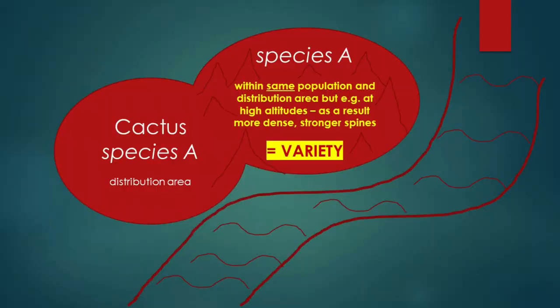Abbreviation number two: if it says VAR. or V. that's short for variety. A variety is when the plant is only very slightly differing in its appearance from the main species, and quite importantly it still grows in that same area within and alongside the main population of the species — so it's just a subset that looks slightly differently.